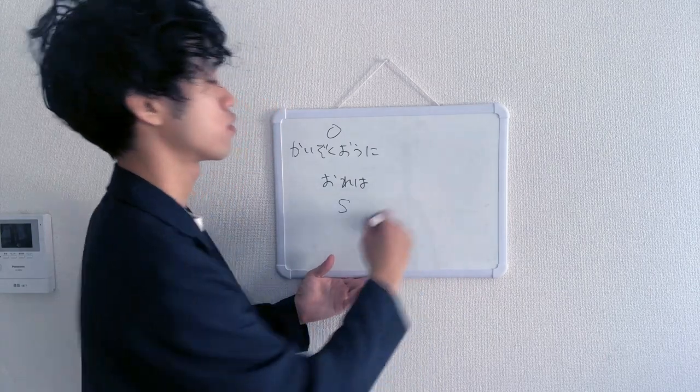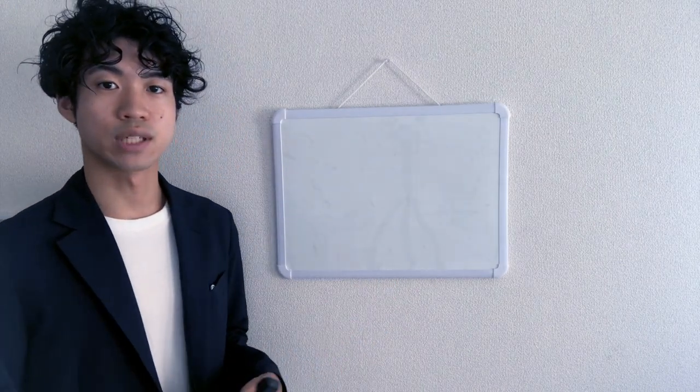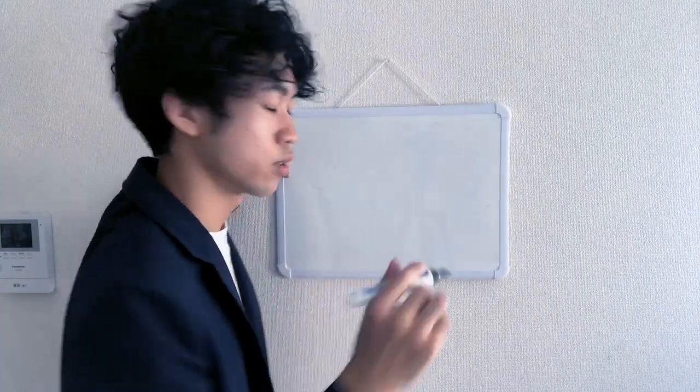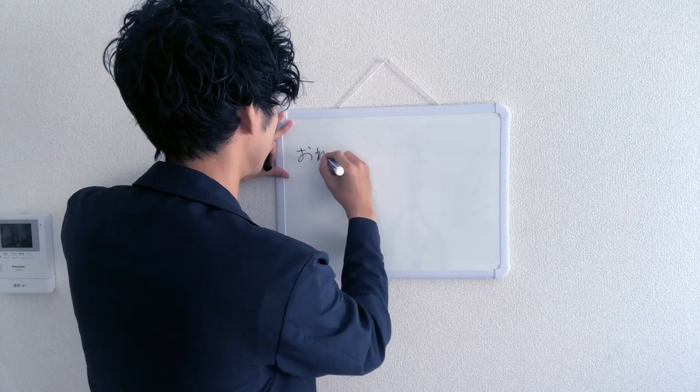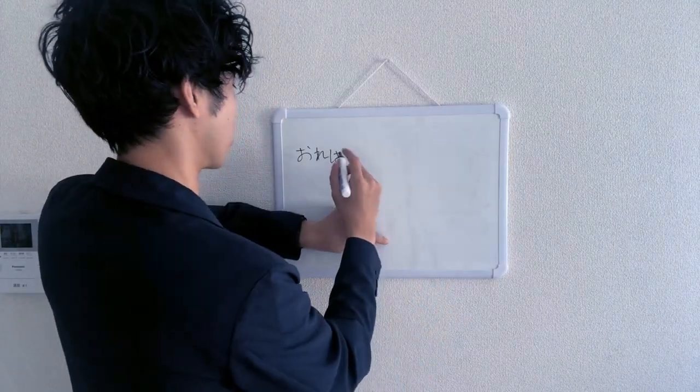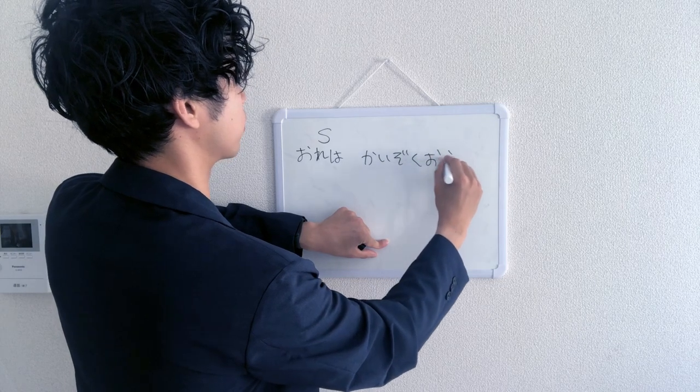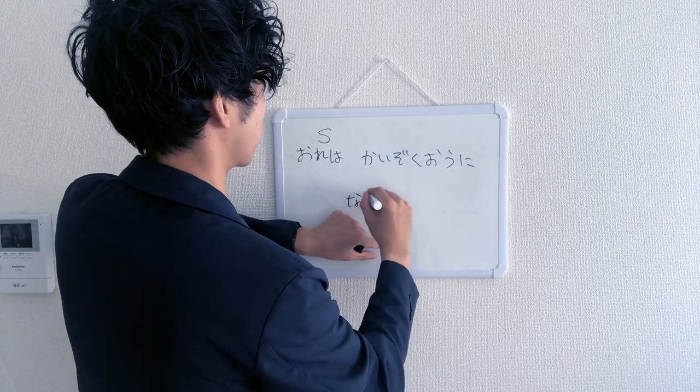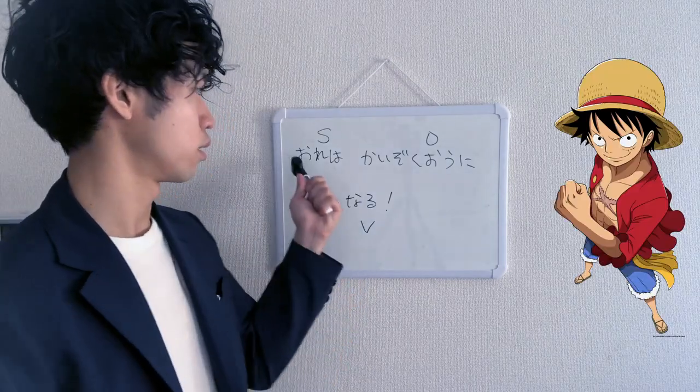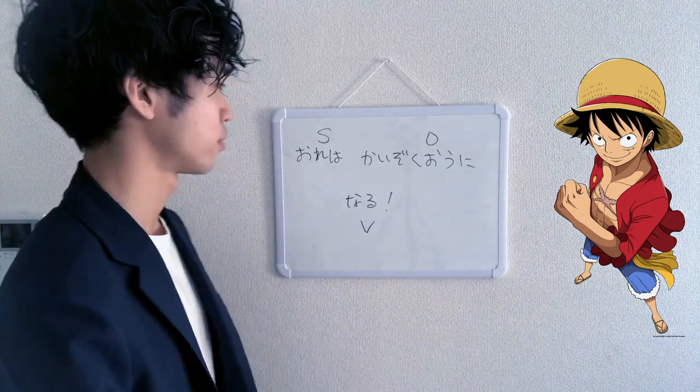So today, instead of focusing on SOV, we want to decipher it just like we do in a natural Japanese. So SOV, say SOV. That's a Japanese sentence structure, SOV. It should be like this: 俺は海賊王になる. 海賊王に俺はなる.